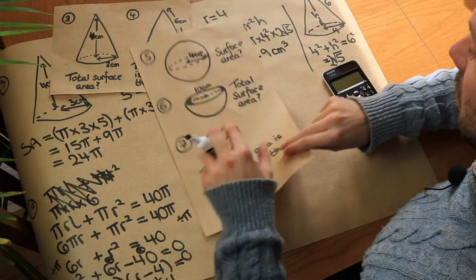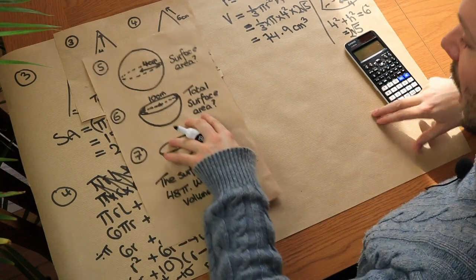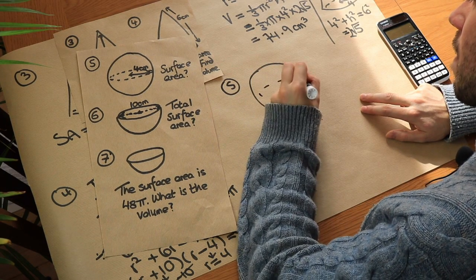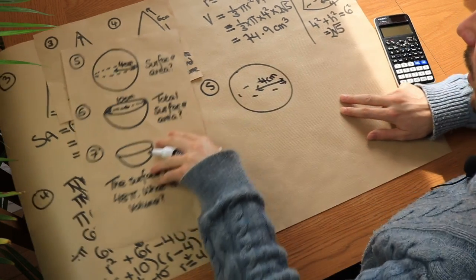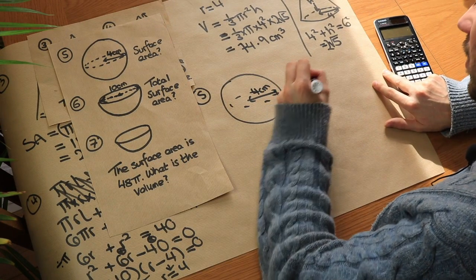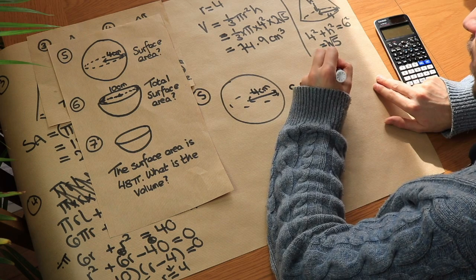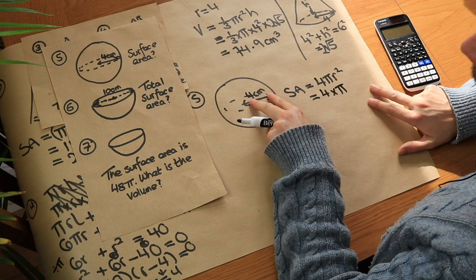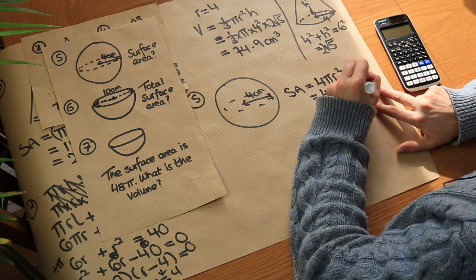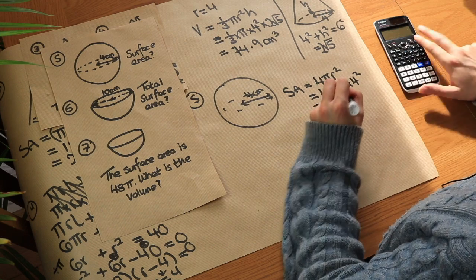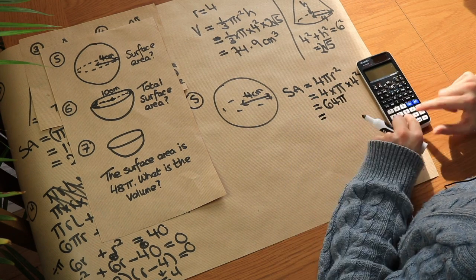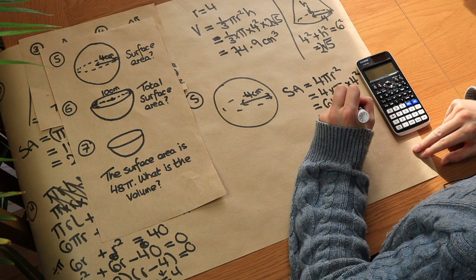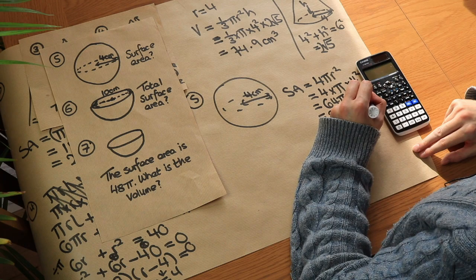Now we've also got some sphere and hemisphere questions. For a sphere of radius 4, we want the surface area. The surface area of a sphere is 4 pi r squared, so we do 4 times pi times 4 squared, which gives 64 pi. Pressing the SD key gives 201.1 centimetres squared.